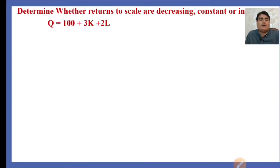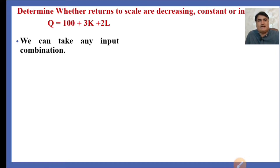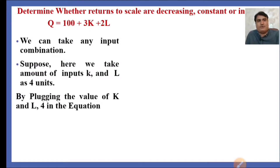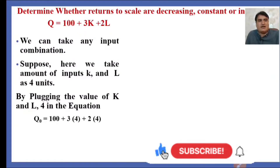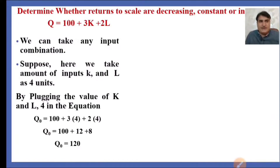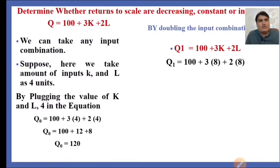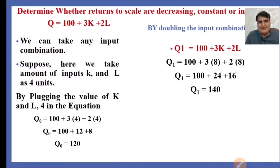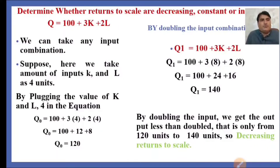Now we use the third production function: Q = 100 + 3K + 2L. Suppose we take 4 units of labor and 4 units of capital. By plugging K=4 and L=4 into the equation, the total output Q0 = 120 units. After doubling the input, we get an output less than double — only from 120 units to 140 units. So this is decreasing returns to scale.